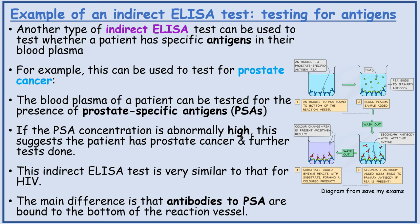For example, this can be used to test for prostate cancer. The blood plasma of a patient can be tested for the presence of prostate-specific antigens. If the prostate-specific antigen concentration is abnormally high, this suggests the patient has prostate cancer and further tests are done. This indirect ELISA test is very similar to that for HIV. The main difference is that antibodies to PSA are bound to the bottom of the reaction vessel.